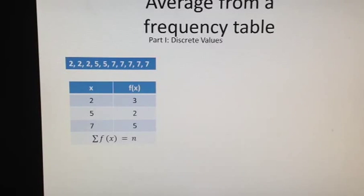This is the corresponding frequency table. Value 2 appears 3 times in the distribution, value 5 appears 2 times, and value 7 appears 5 times.